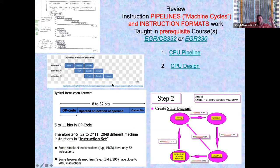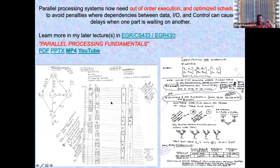You should all have memorized what an instruction format with opcode and operands looks like, what a finite state machine looks like, and how pipelines and superscalar designs work. The simplest pipeline: while fetching the next instruction, you're decoding the last. That's not superscalar — superscalar means doing two fetches at a time. Parallel processing systems need out-of-order execution and optimized scheduling to avoid penalties from data, IO, and control dependencies between parallel pipelines.